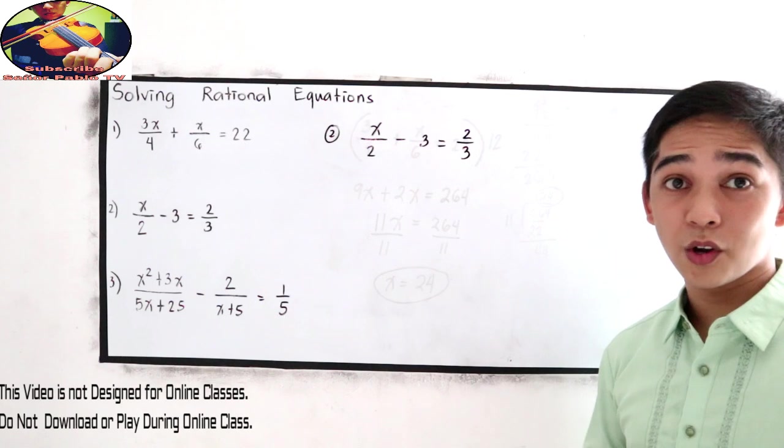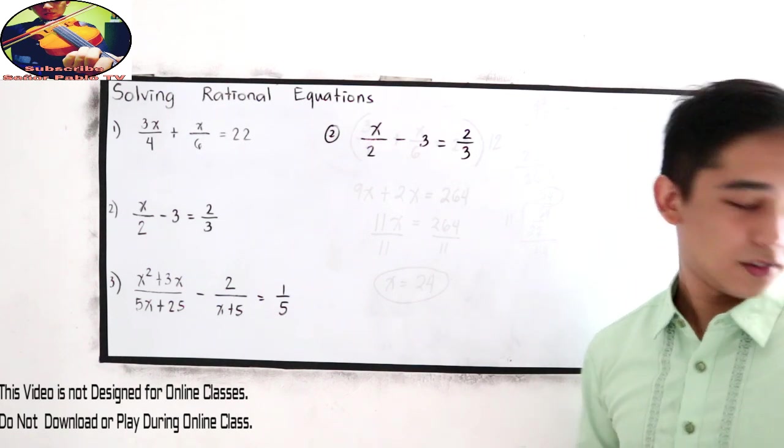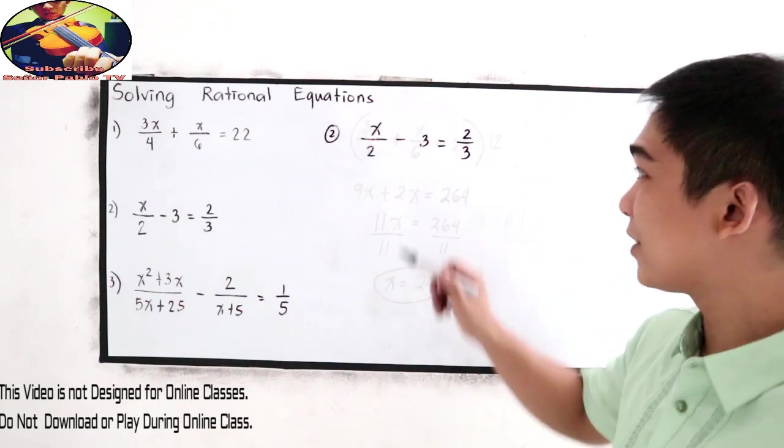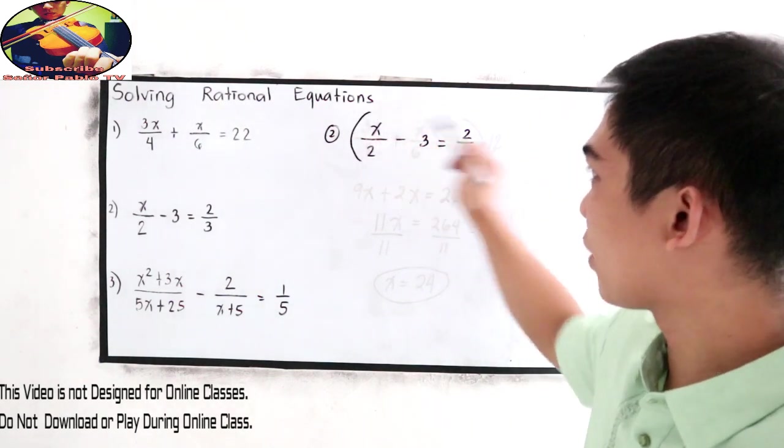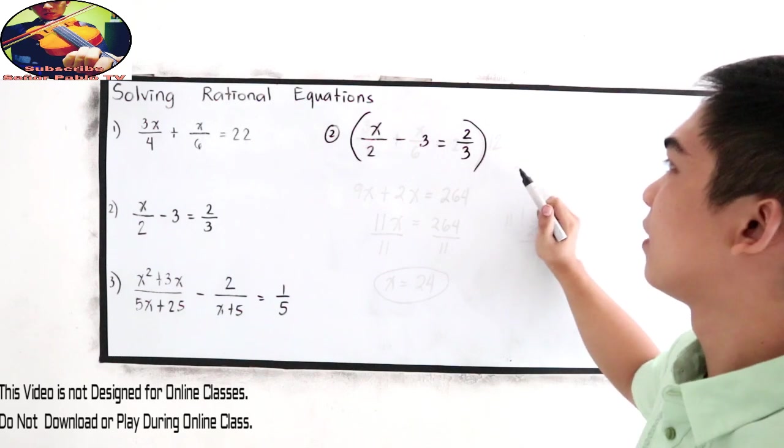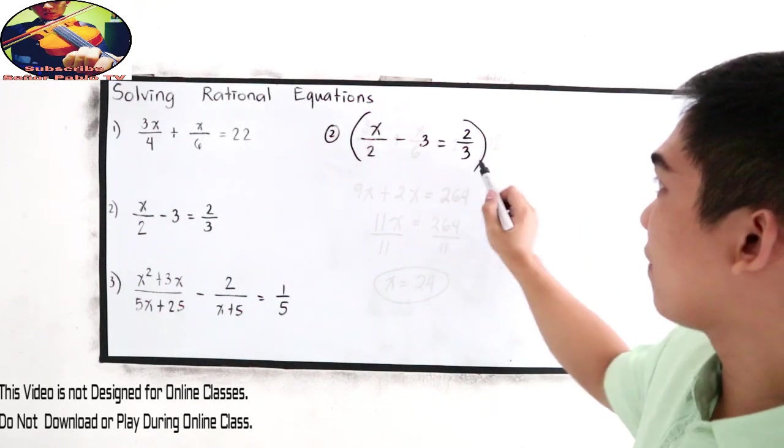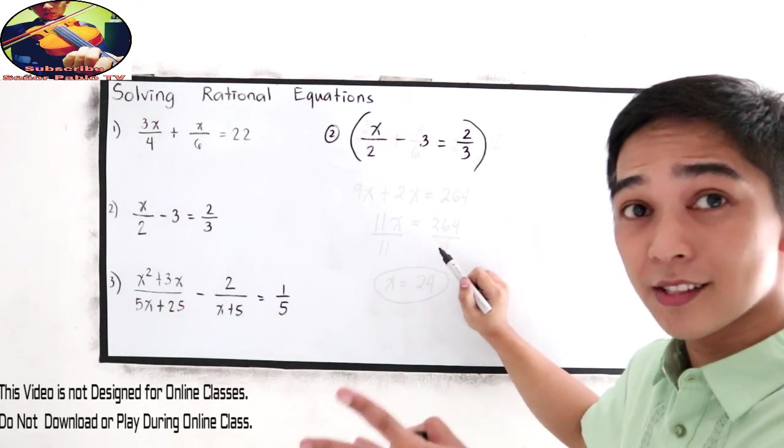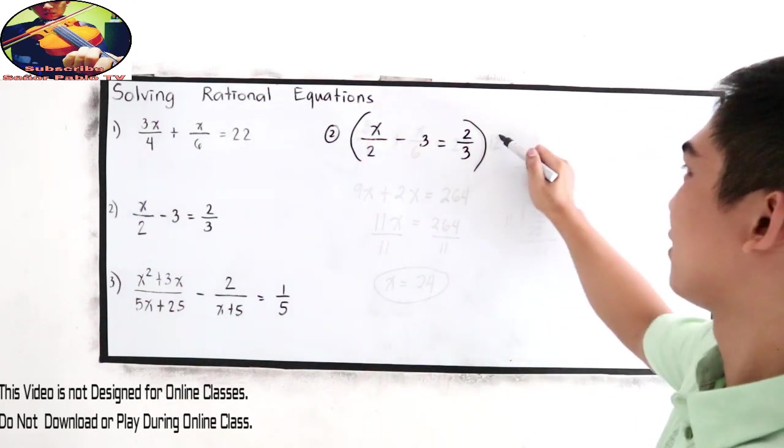x over 2 minus 3 is equal to 2 over 3. What method are you going to use? Let's use the easiest one. Find the LCD then multiply to our equation. 3 and 2, LCD is 6.